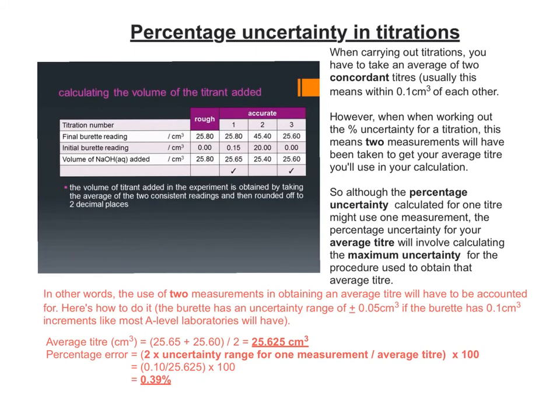What we're actually doing is doubling the uncertainty range because you're doing the same thing twice. The same uncertainty range has to be doubled up if you do the same thing twice, because the more times you do something the more chances you have of making a mistake. So if the error range for a procedure is plus or minus x, doing it twice makes it plus or minus 2x, and three times makes it plus or minus 3x. Here, you multiply 0.05 — the uncertainty range for one measurement in a burette — by 2, giving 0.1. Divide by the calculated average titer of 25.625 and multiply by 100, giving 0.39%.